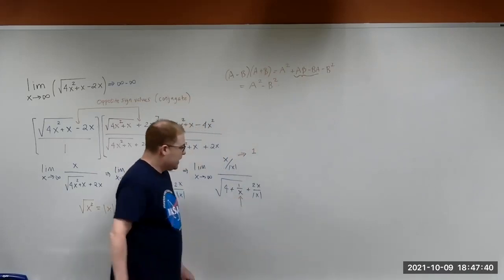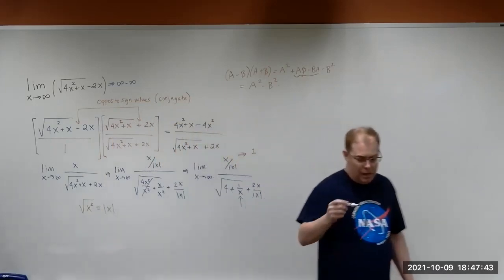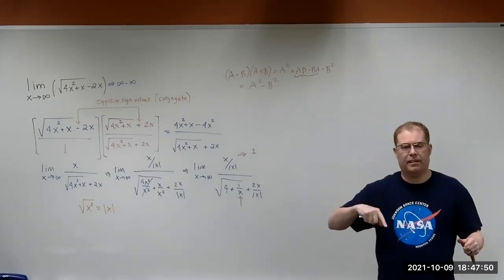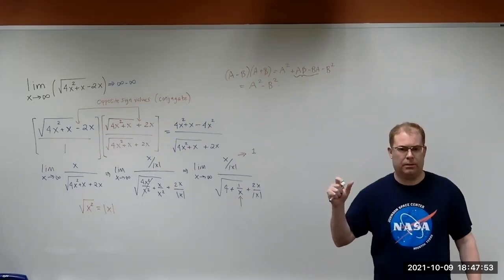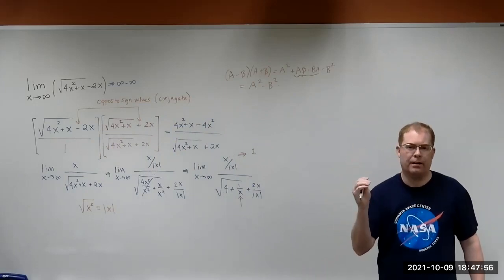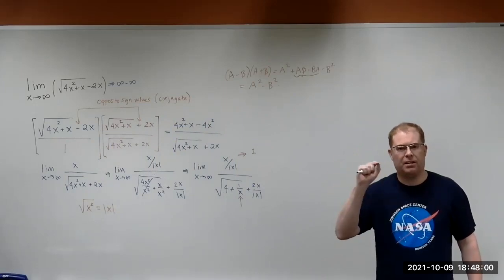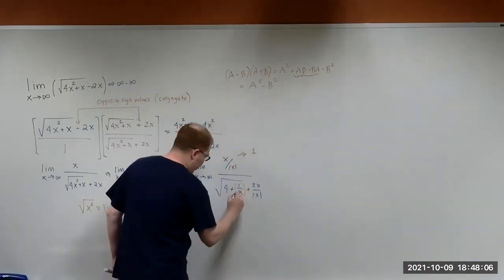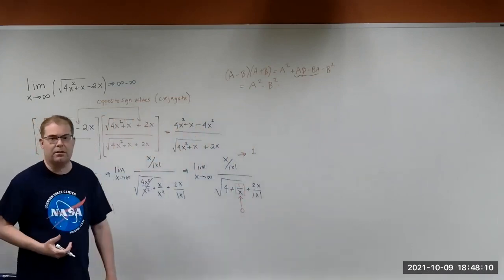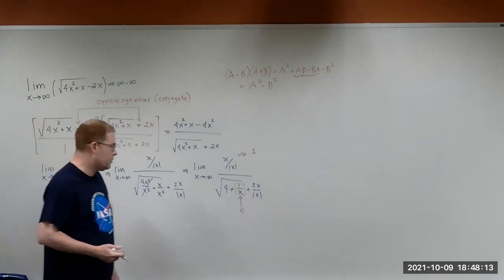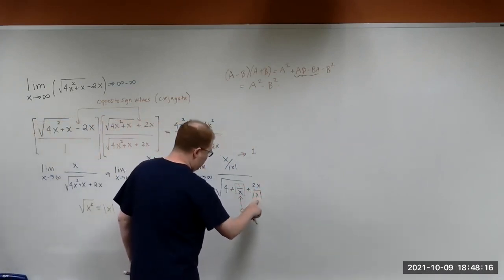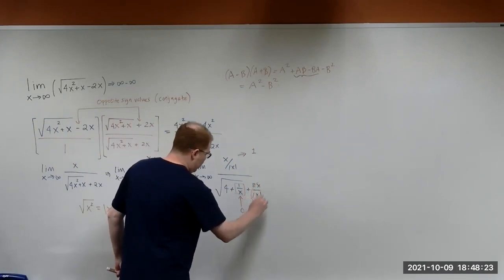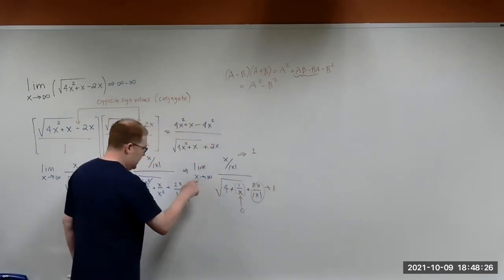This part — as x gets larger and larger — anytime you take a constant and divide by a large number, the overall effect is that it gets closer and closer to 0. For example, 1 over 100, 1 over 1000 — each time it gets closer and closer to 0. So this 1 over x term goes to 0. And again, the 2x over the absolute value of x — just like up here — this part approaches 1 as x gets larger and larger.